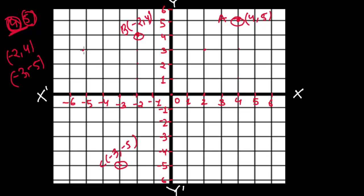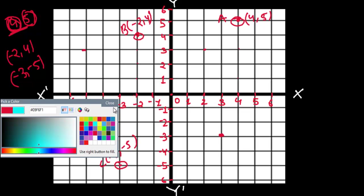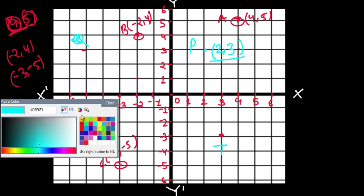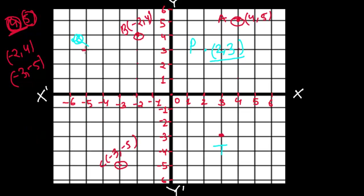Now some points are already given on the graph. Let's read them. For point P: along the x-axis it is two, and along the y-axis it is three, so point P is at (2, 3). For point Q: along the x-axis it is negative five, and along the y-axis it is positive three, so point Q is at (−5, 3).